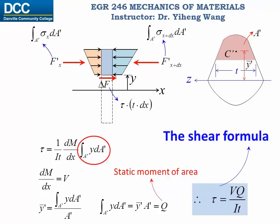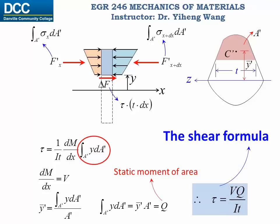It is important to notice that for a given cross-section, V and I are both constants: V is the internal shear force at that location, and I is the moment of inertia of the entire cross-section about the z-axis. However, Q and t both change with vertical location y — Q is again the static moment of the area, and t is the width of the top segment at that location.